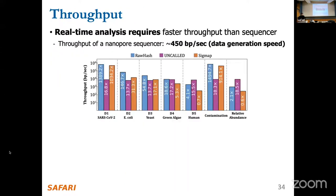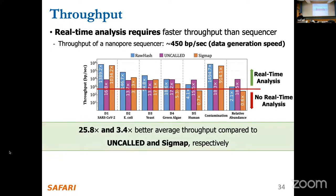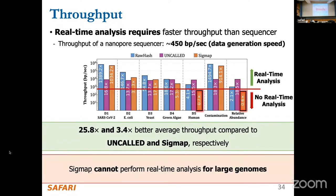The first result is about throughput. The y-axis shows throughput results; the x-axis shows the datasets. Bars above the threshold line indicate that a tool achieves real-time analysis by exceeding the nanopore device's throughput of around 450 bases per second; bars below indicate failure. RawHash provides significant throughput improvements compared to the other tools due to its efficient hash-based similarity search. Notably, SIGMAP fails to perform real-time analysis for large genomes because of the computationally costly distance calculation it performs.